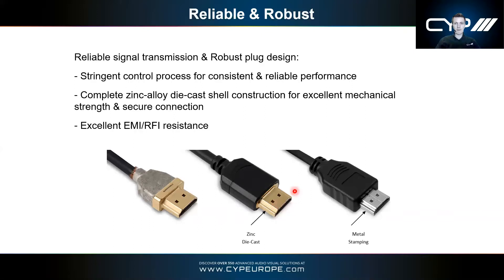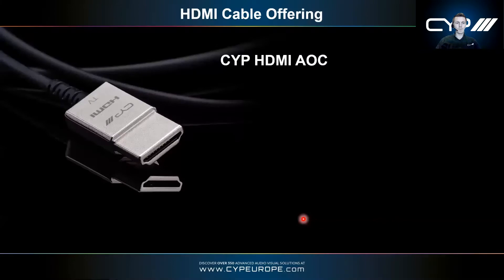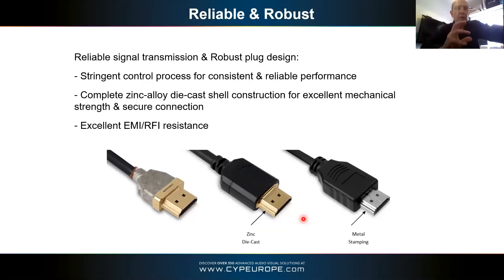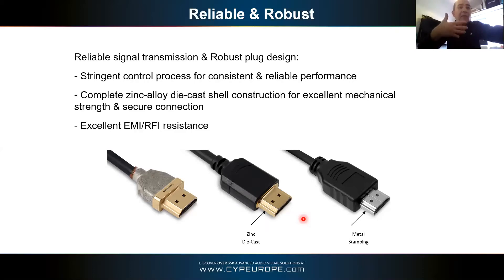This image shows the zinc die cast head of our premium HDMI cable — one piece without the normal join from metal stamping. This really helps with interference right at the end of the cable, close to the powered electronics. Having that die cast end rather than a folded construction significantly reduces direct EMI from both sources and sinks.